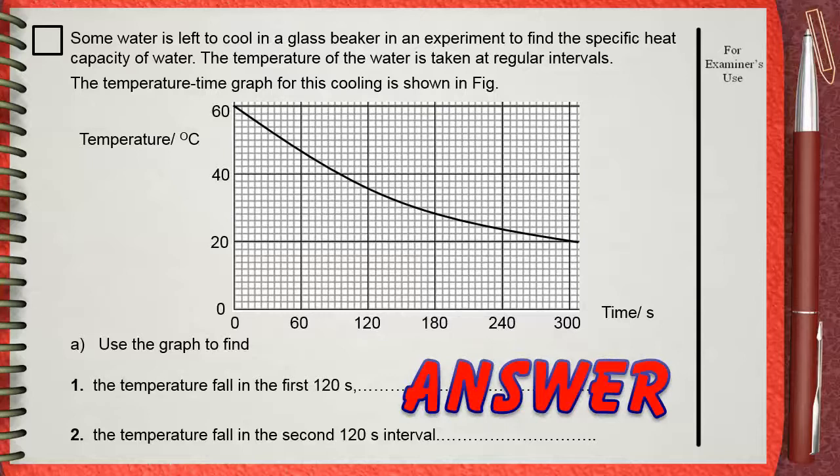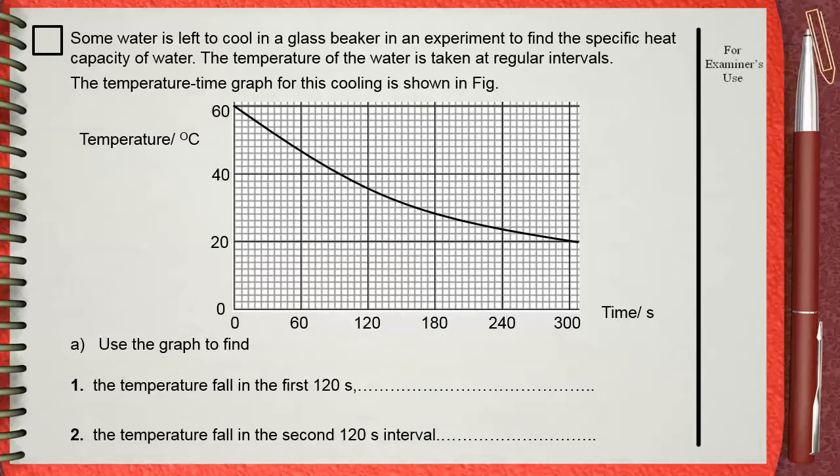At the start of the experiment at time zero, the temperature was 60 degrees Celsius. After 120 seconds, the temperature is now 36 degrees Celsius. This means that in the first 120 seconds, the temperature has fallen by 60 minus 36.